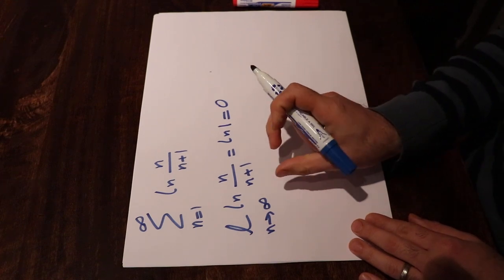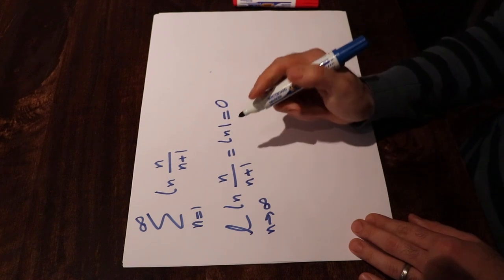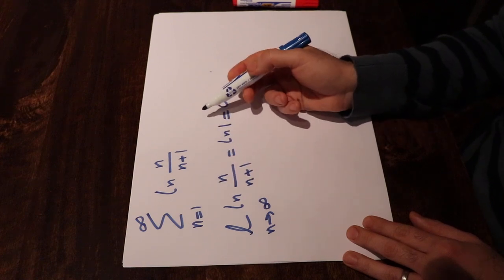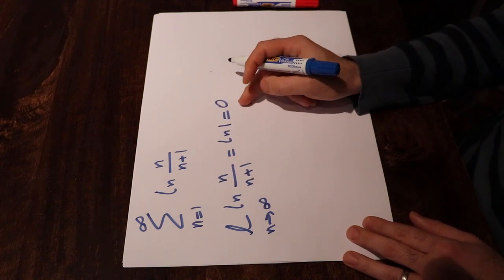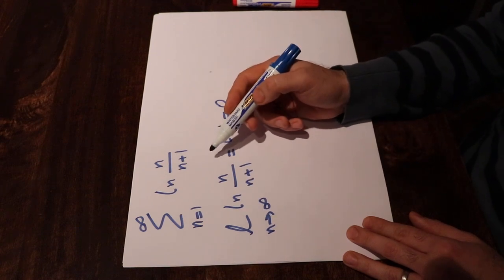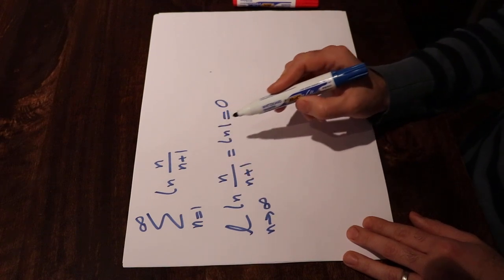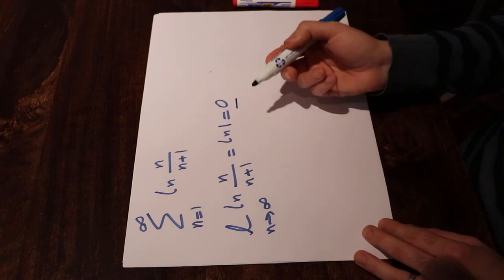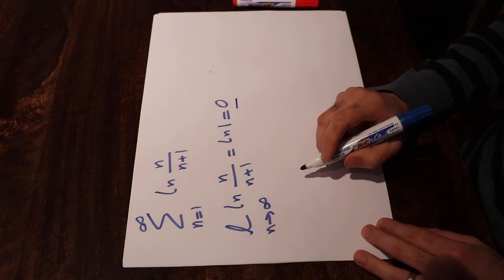In any case, since this limit is equal to 0, then you cannot conclude the series is divergent or convergent. Note that if it were not equal to 0 or if this limit did not exist, you could say this series is divergent. But now since this is equal to 0, that test is not useful. So you need to find a different way.